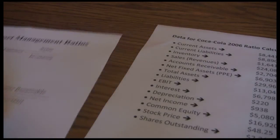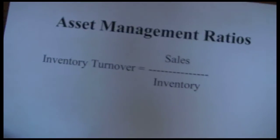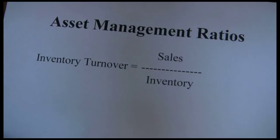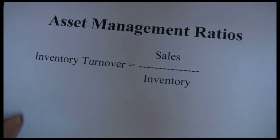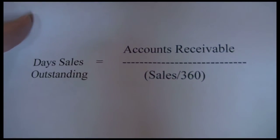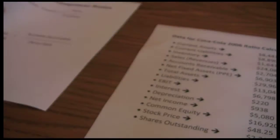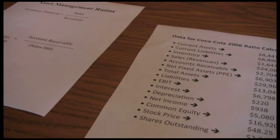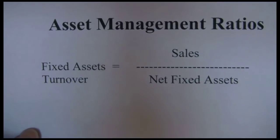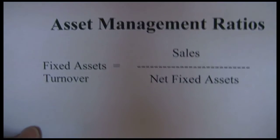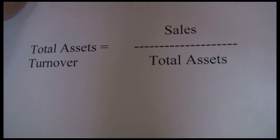The next ratio category is asset management ratios. There are four asset management ratios: inventory turnover, day sales outstanding, fixed asset turnover, and total assets turnover.